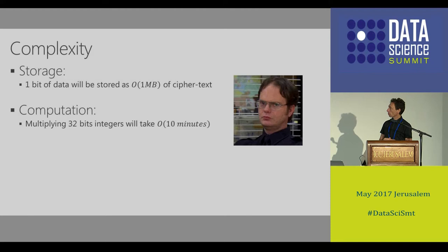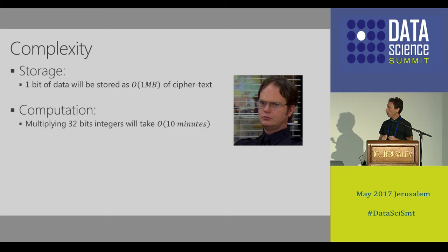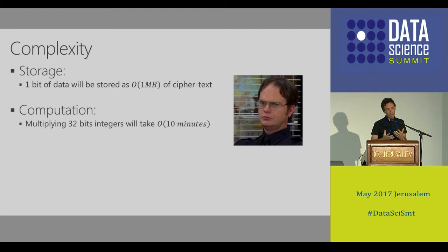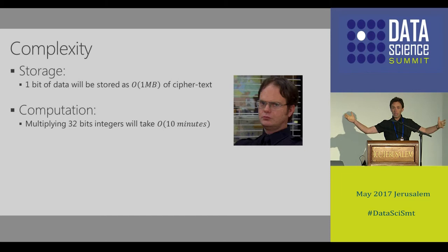For example, storing one bit of raw data requires encrypting it into something of the order of one megabyte. And if you want to build a circuit for multiplying two integers and apply it to encrypted integers, it's going to take about ten minutes just to do a single multiplication. So it's a nice theoretical tool but not very practical. But we can do better than that - I already showed you a demonstration where we could do a big dot product in just three seconds.